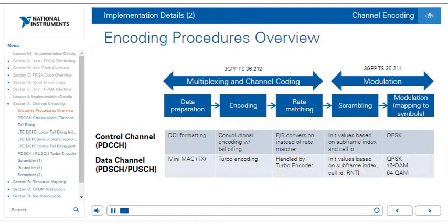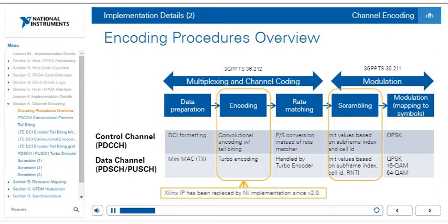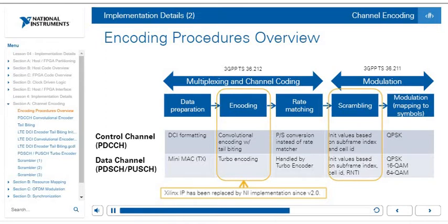The LTE standard specifies multiplexing, channel coding, and modulation procedures. For the control channel (PDCCH): data preparation from DCI formatting, convolutional encoding with tail biting, rate matching via parallel-to-serial conversion, and scrambling using initial values based on subframe index and cell ID, then QPSK to map symbols. For the data channel (PDSCH/PUSCH): a mini-MAC for data preparation, turbo encoding and rate matching, scrambling with initial values based on subframe index, cell ID, and RNTI, and modulation to QPSK, 16QAM, or 64QAM. Since version 2.0 of the application framework, NI CDL implementations are used rather than Xilinx IP.